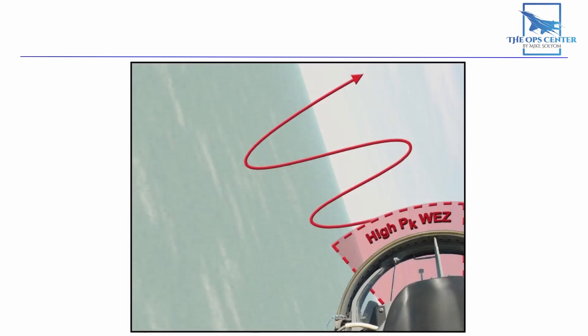Second is look at where the Bandit wants to be, which is in the High PK Wes as shown here. That Wes is a big cone, but when you're in a turn, it's just a slice of that cone. Which is another reason why you want to stay in a turn.